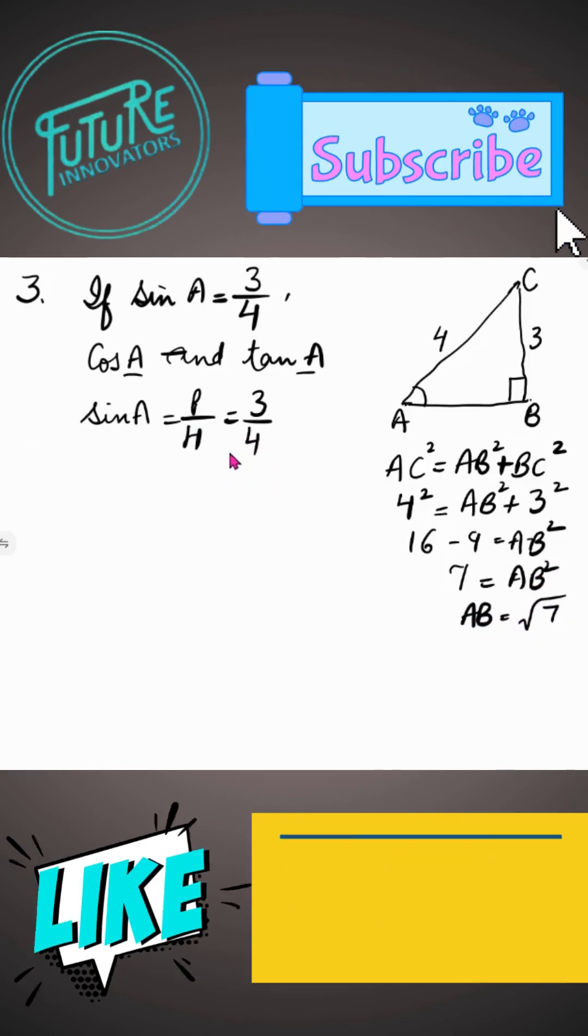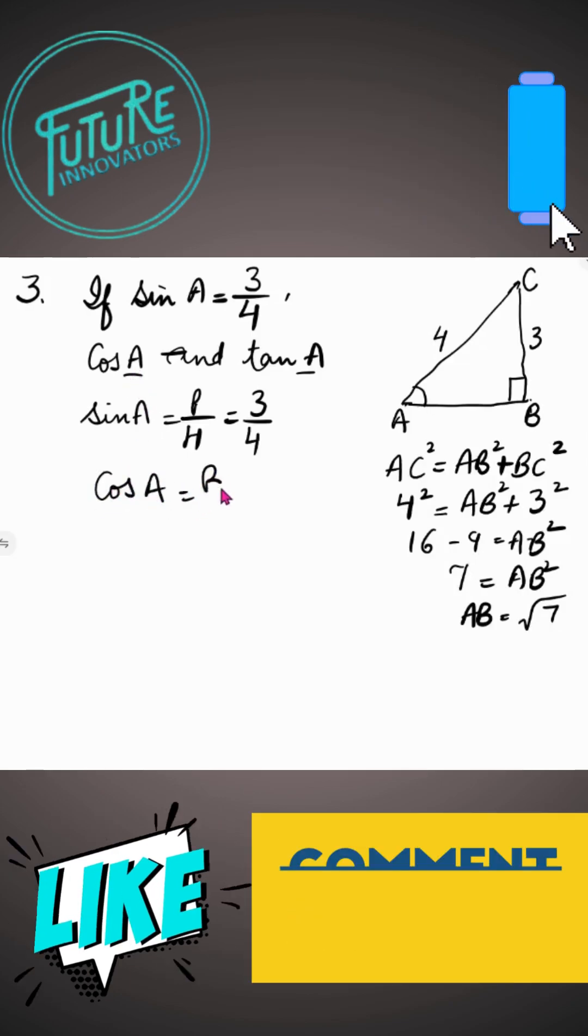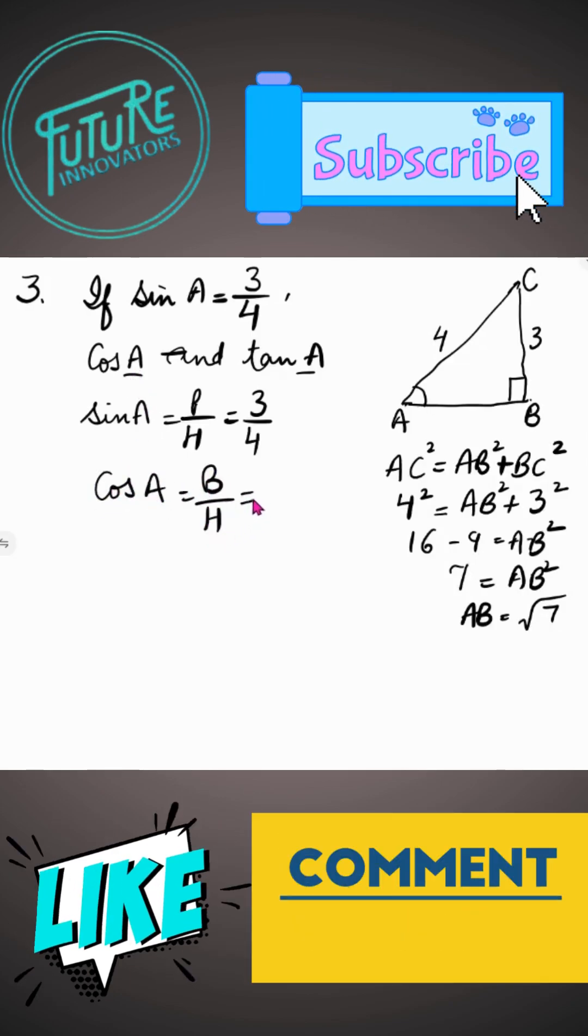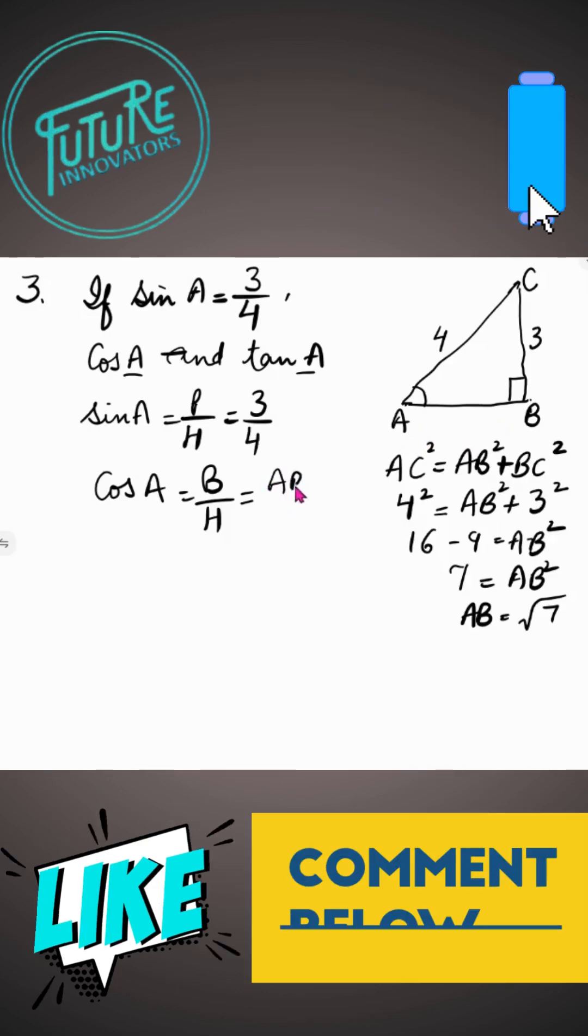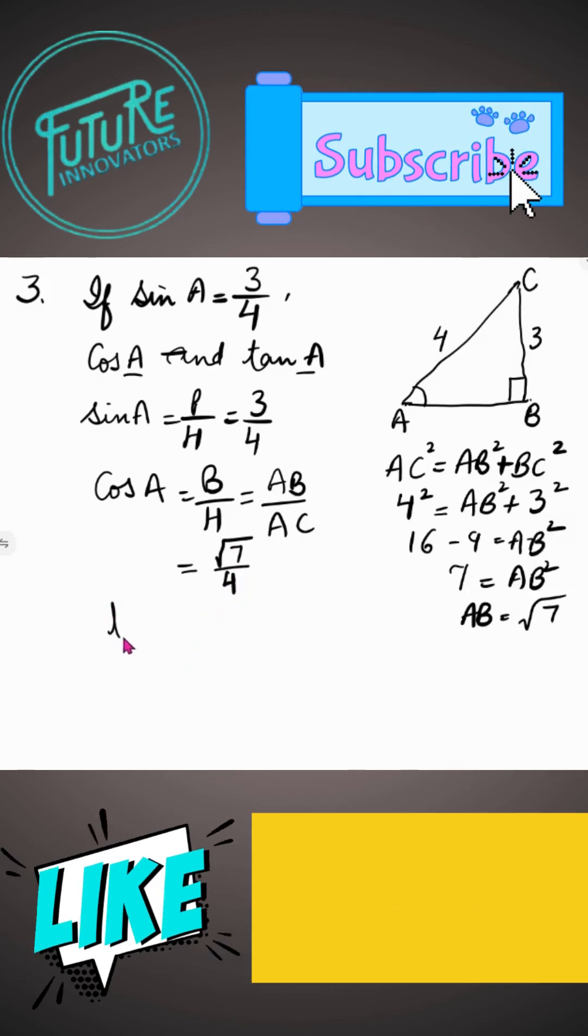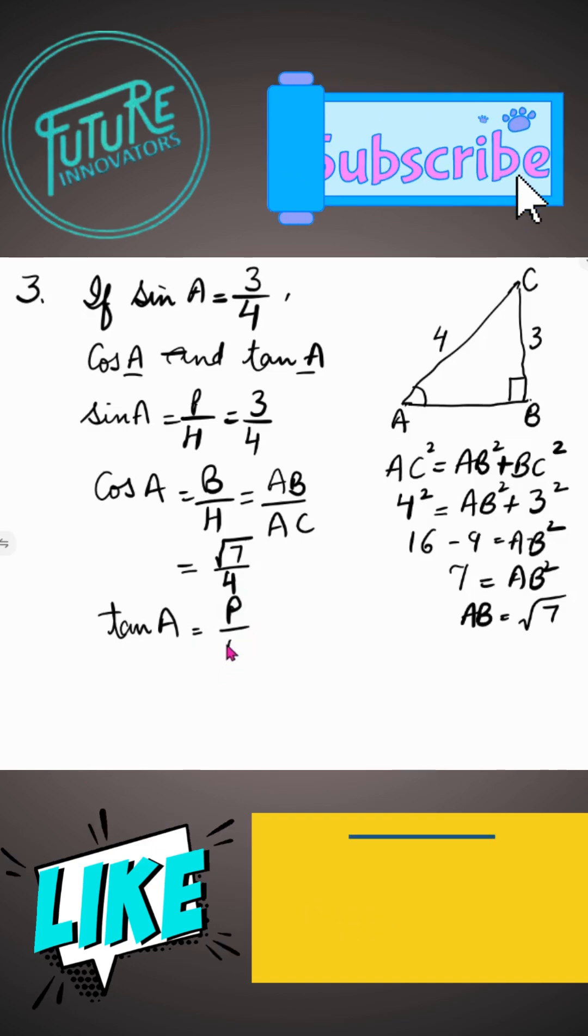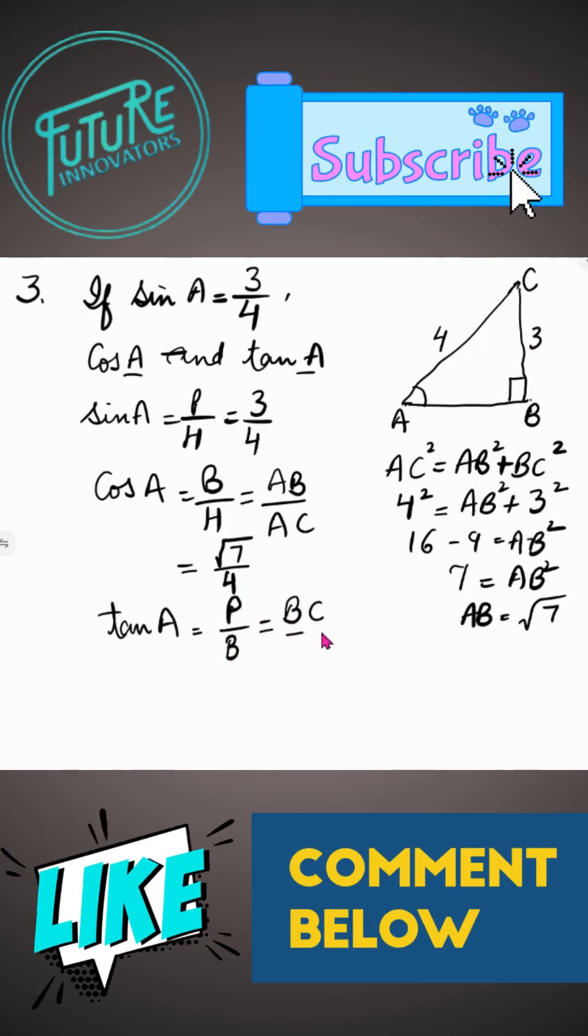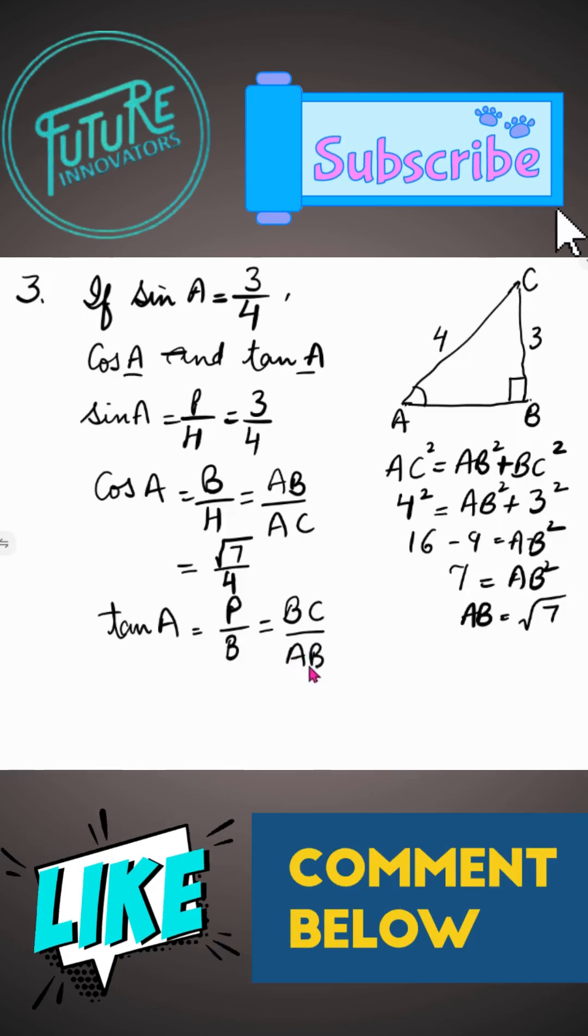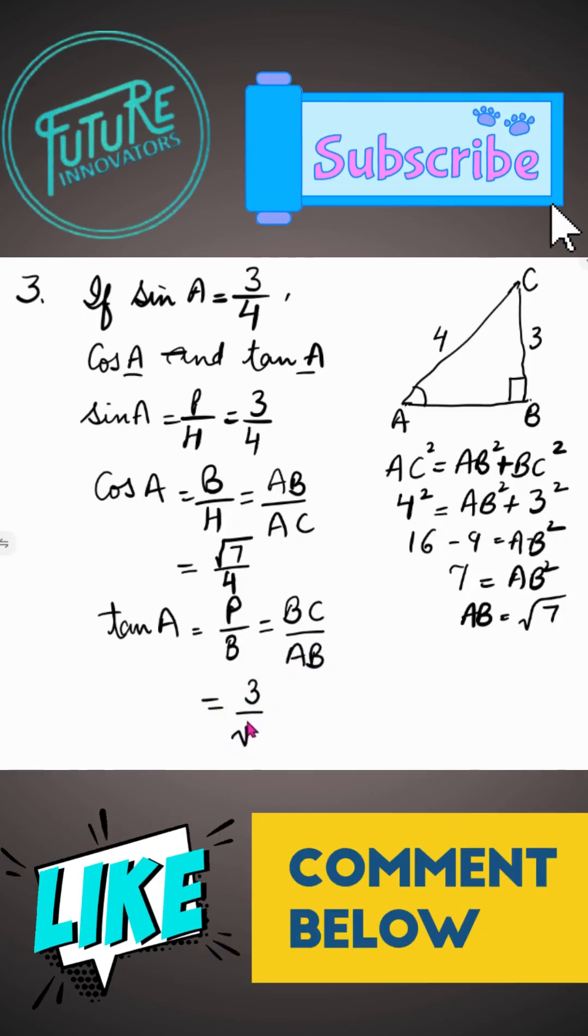So now we will put the values. Let's find out cos A. We know cos A is equal to B upon H. So what is B? AB upon AC, which is equal to root 7 upon 4. And tan A is equal to P upon B. Perpendicular is BC upon base is AB. So BC is equal to 3 upon AB is equal to root 7.